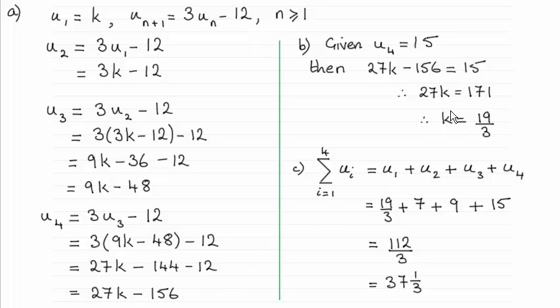In part B the value of k was 19 thirds, and in part C the exact numerical sum was either 112 over 3 or 37 and a third.